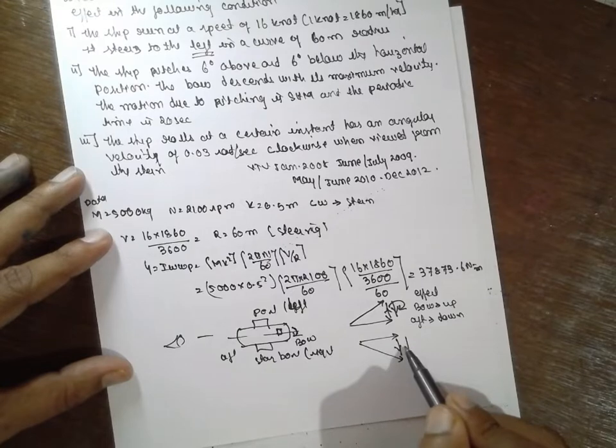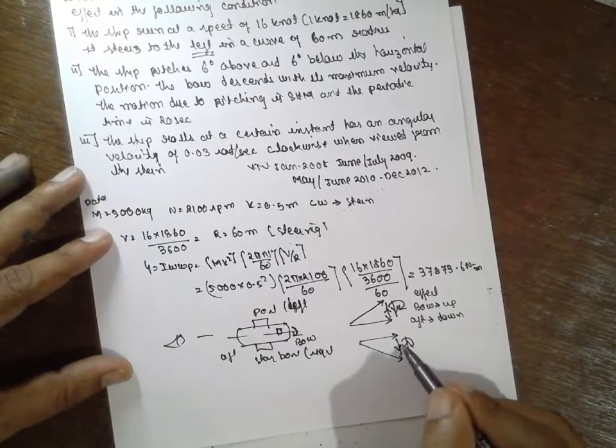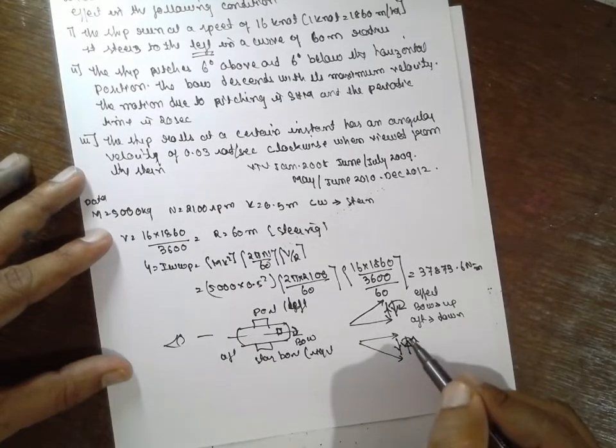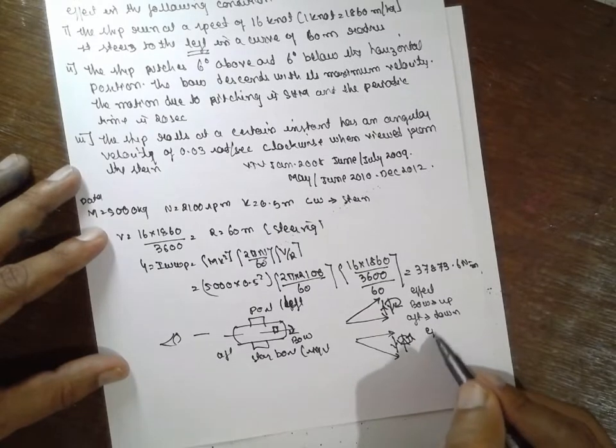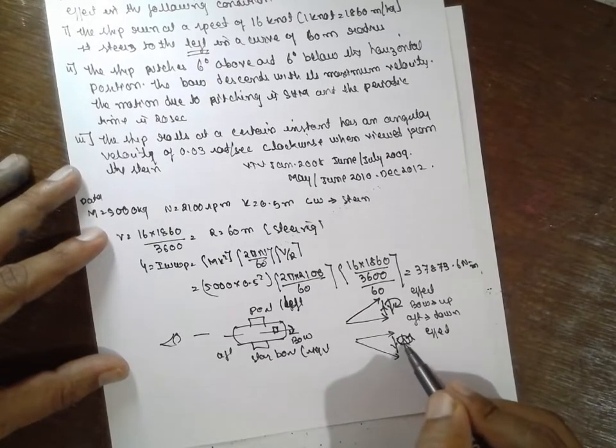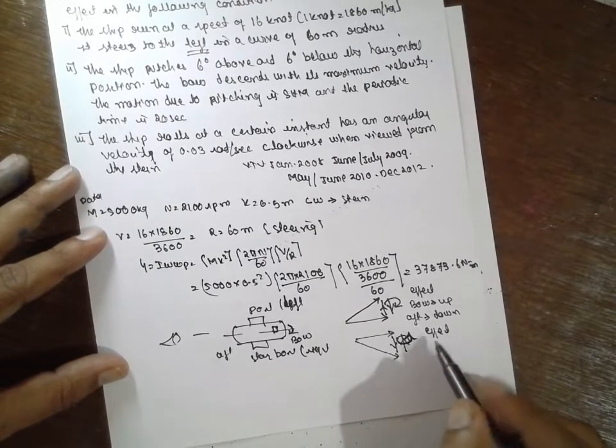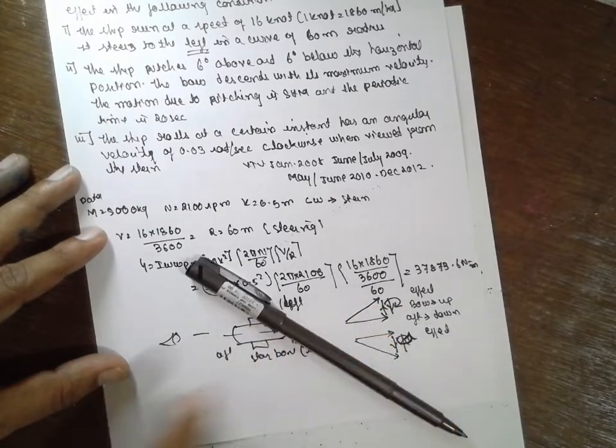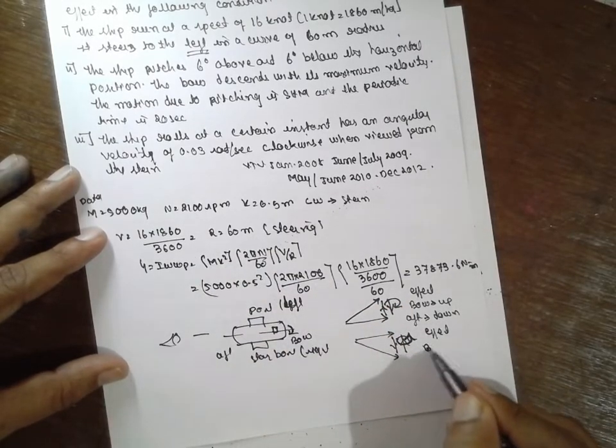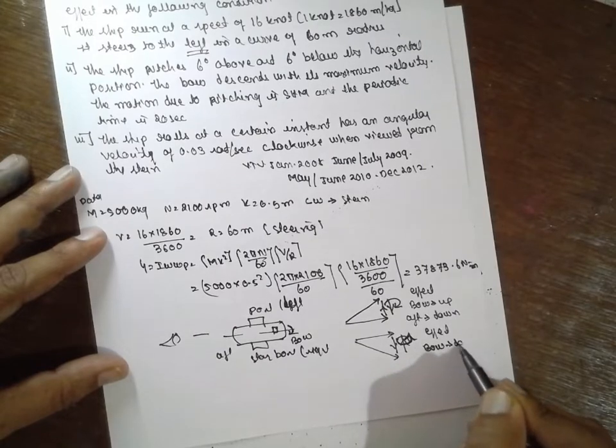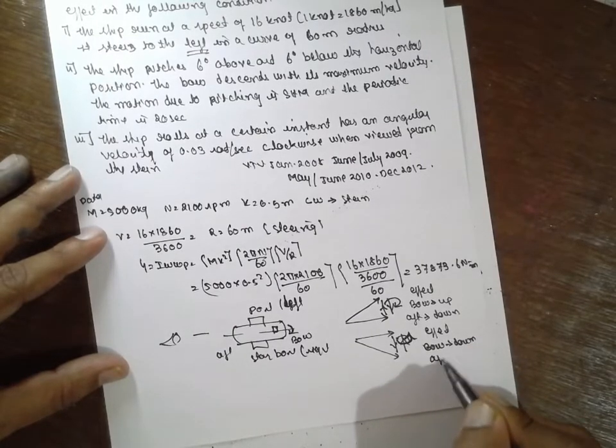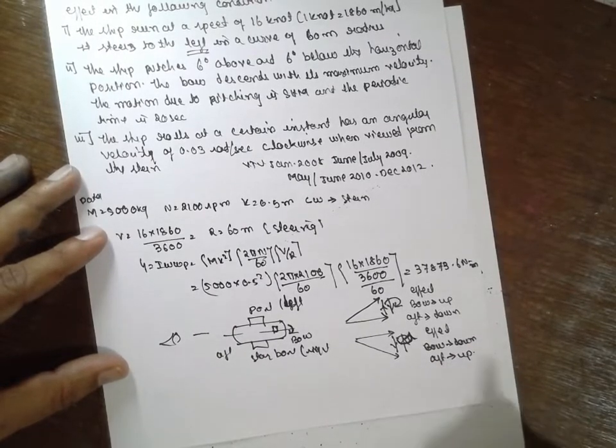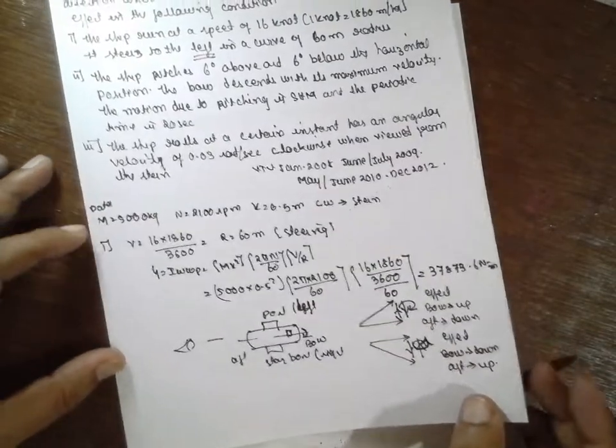Next effect will be in this way. Active, reactive, based on this one, opposite direction, exactly opposite direction you have to draw this effect. Here what happened, in this way dips here, therefore bow will be down, bow down, aft up. This completes your steering.